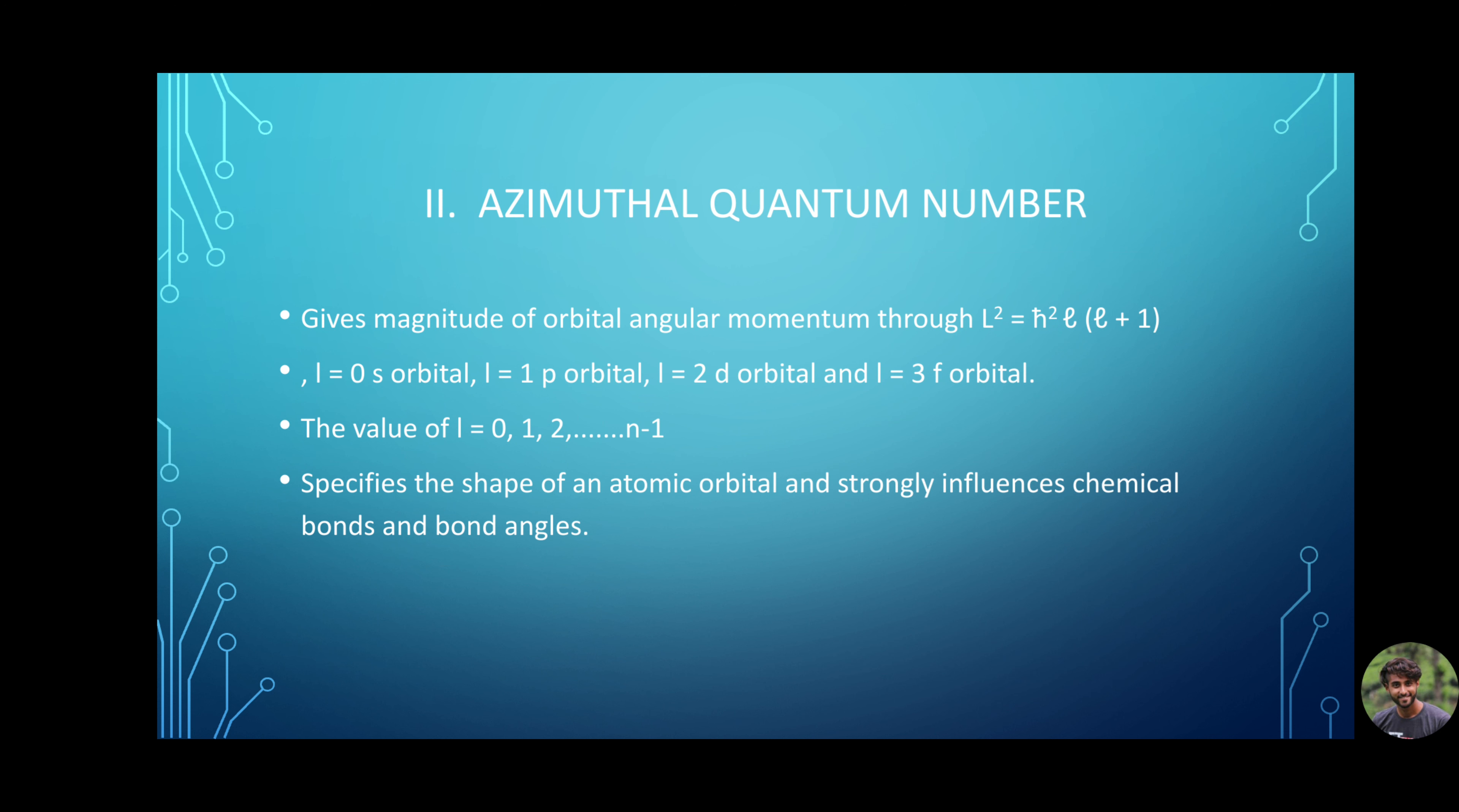Azimuthal quantum number. Azimuthal quantum number is called the angular quantum number or orbital quantum number. This describes the subshells and gives the magnitude of the orbital angular momentum through the relation L² = ℏ²l(l+1). When l = 0, it is called s orbital. l = 1 is a p orbital. l = 2 is a d orbital and l = 3 is an f orbital. The value of l ranges from 0, 1, 2, 3, 4 up to n-1.